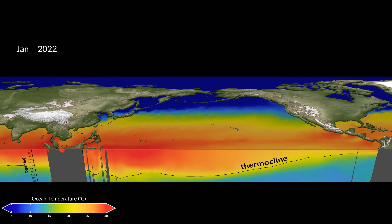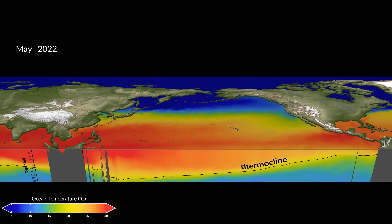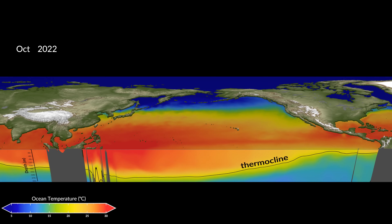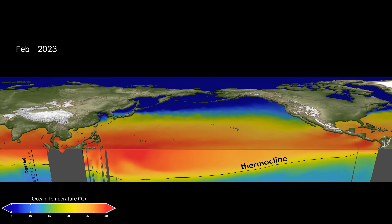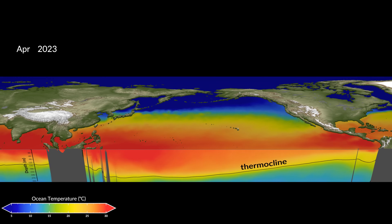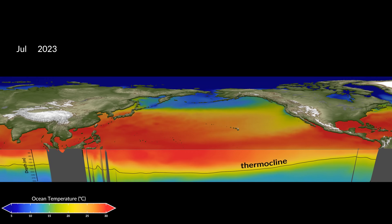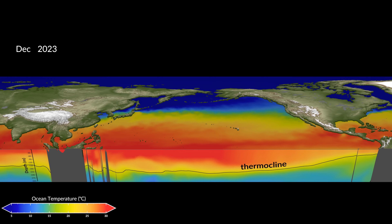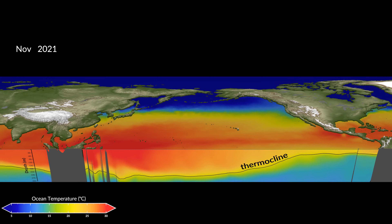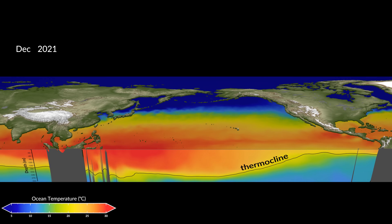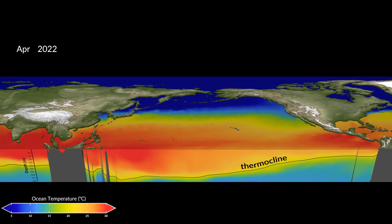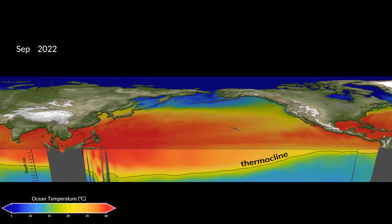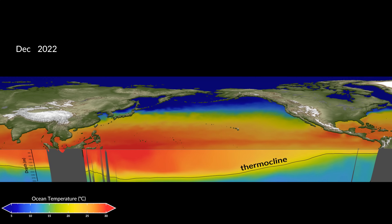Every two to seven years, the warm pool of water spreads eastward into a long shallow pool, flattening the tilt of the thermocline. This phenomenon is called El Niño. El Niño is one of the two phases of the larger phenomenon called El Niño-Southern Oscillation, or ENSO. The other phase of ENSO is La Niña. El Niño is the warm phase and La Niña is the cold phase.